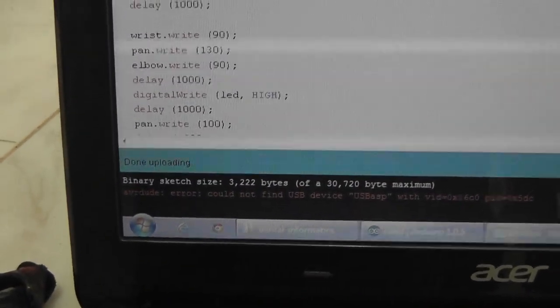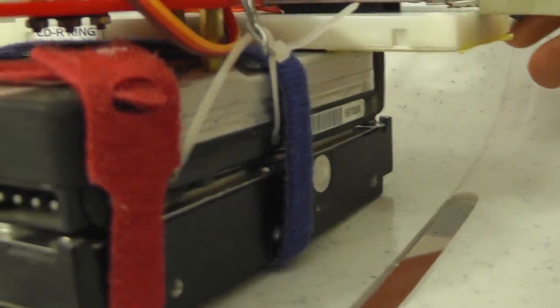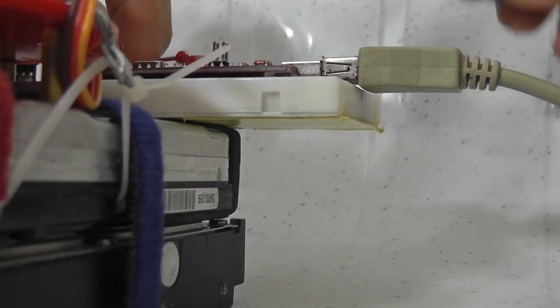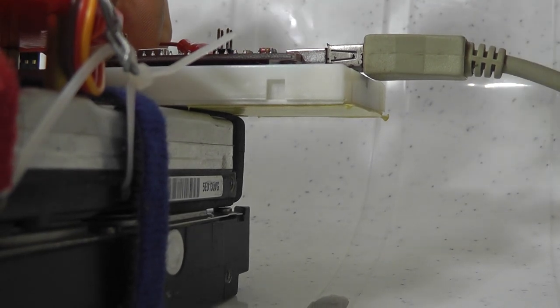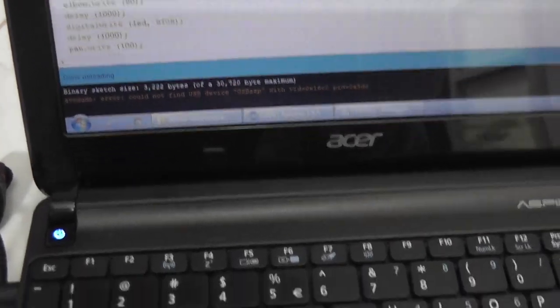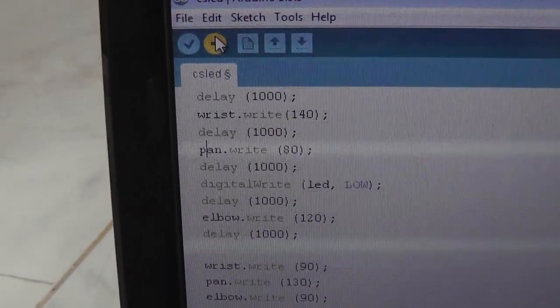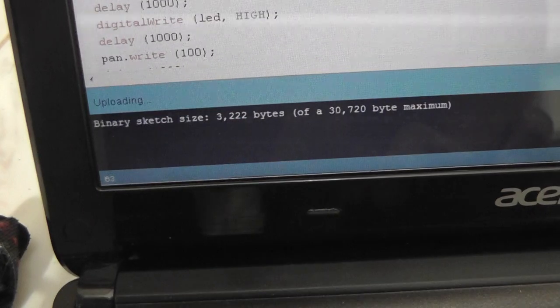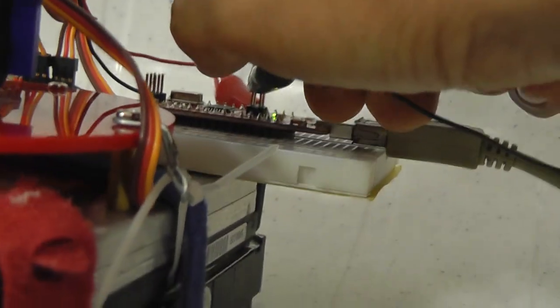It says there is an error. Okay, let's see. Anyway, it says done uploading. Let's try again. It works. One more time. I think I have to make sure I'm only clipping the two wires here. Yeah, okay. Let me try again. Compiling sketch, and then uploading, done uploading.